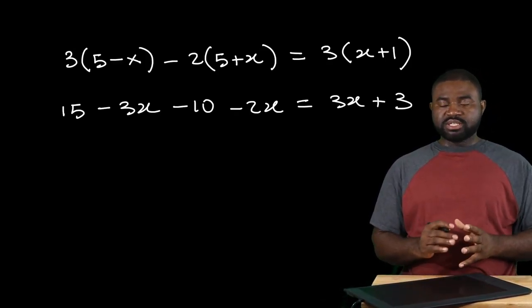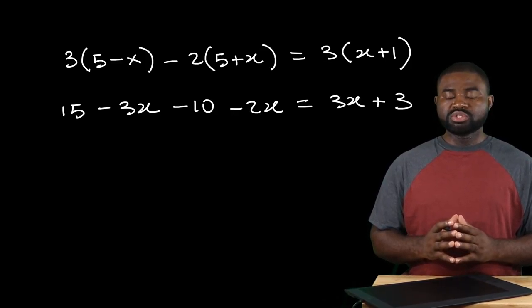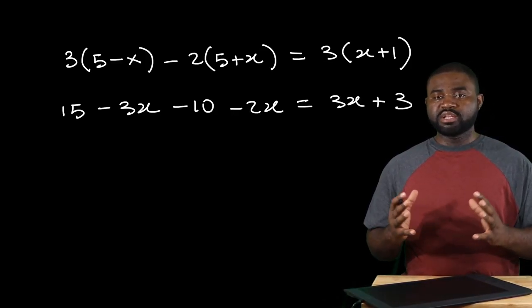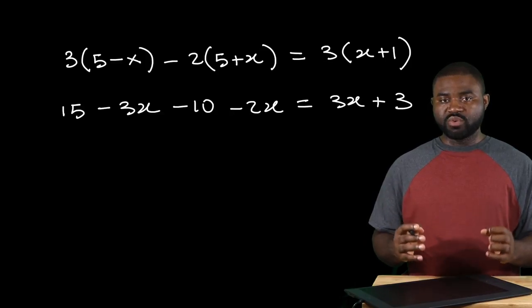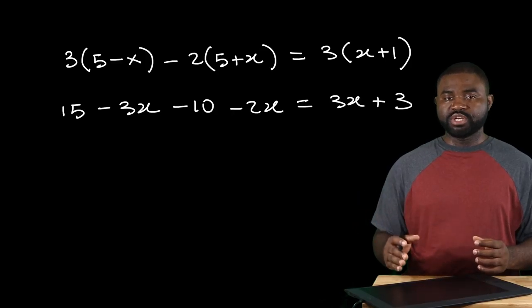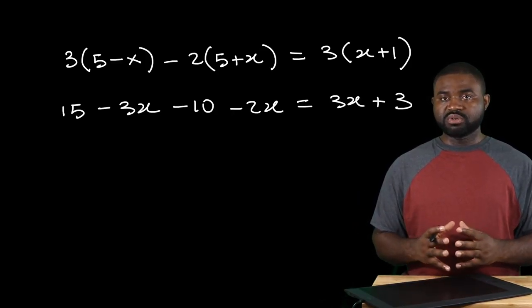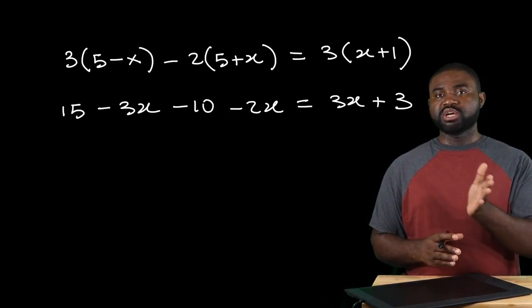Now the next step would be for you to bring like terms to one side of the equation. In other words, all the terms that contain x will be taken to one side of the equation, and the terms that do not contain x will be taken to the other side of the equation.